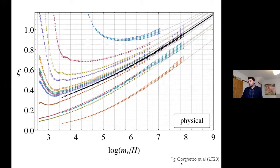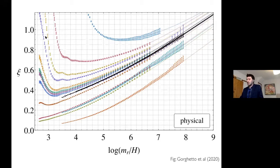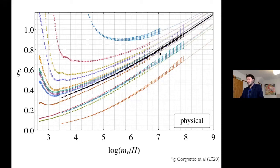The most recent paper by Gorghetto et al. from this year shows evidence of the logarithmic scaling violation. The string length parameter psi is evolving as they do simulations at different values of the log. Different simulations starting with different values of psi all seem to be going onto a universal evolution. You can take this evolution and extrapolate it, but you're extrapolating by many orders of magnitude — that's why there is uncertainty. The assumption made by these authors is that there is logarithmic scaling violation, though this could turn over and go to a constant.